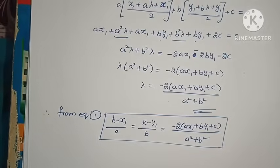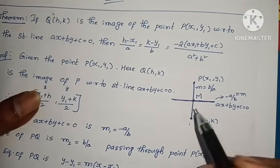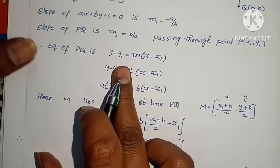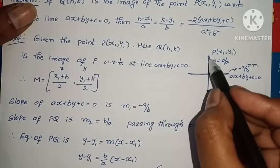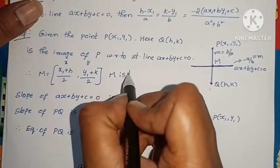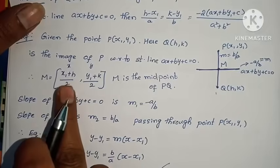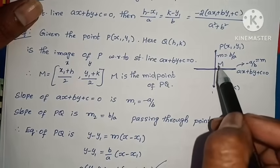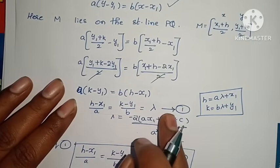Substituting this lambda value into equation 1: (h minus x₁) by a equals (k minus y₁) by b equals minus 2 into (ax₁ plus by₁ plus c) by (a² plus b²). Proof complete. So to summarize: for both theorems, the slope of the given straight line is minus a by b, the perpendicular slope is b by a, point-slope form gives the equation of PQ, M is the midpoint for the image theorem, and substituting on the line gives the final lambda.